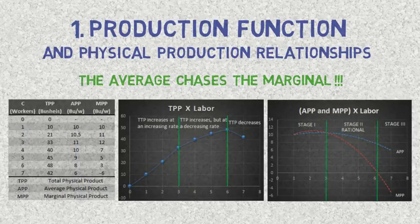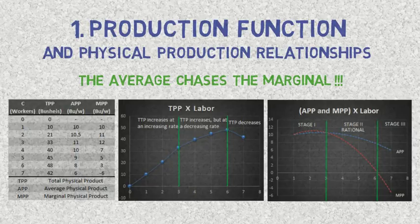Thus, this graph shows that as additional units of one input are combined with a fixed amount of other inputs, a point is always reached at which the additional output produced from the last unit of added input will decline. This is exactly the definition of the law of diminishing marginal returns. This law is a consequence of scarcity, one of the foundations of economics.